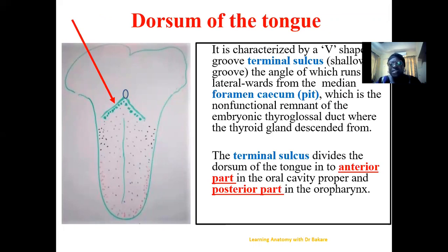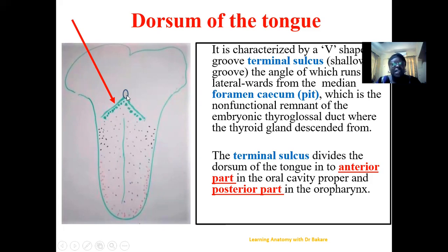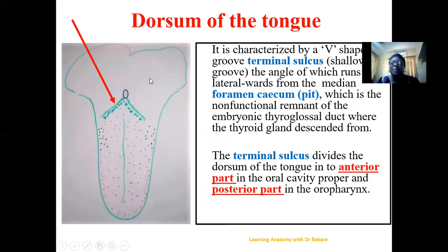The dorsum of the tongue is characterized by the foramen cecum, a pit located around the median plane of the tongue. This is a remnant of the embryonic development of the thyroid gland — when the thyroid gland descends from this region during development, it leaves a pit around this region termed the foramen cecum. On both sides of the foramen cecum is a shallow groove called the terminal sulcus, which runs laterally on both sides giving a V-shaped appearance and divides the dorsum into the anterior two-thirds and the posterior one-third.